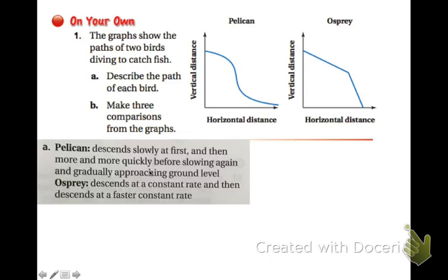And for the osprey to the right, it's descending at a constant rate. That straight line, the straight lines are the linear part of it, is telling us that it's a constant rate, but then it's a more rapid constant rate or faster as it approaches the Earth.